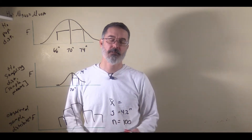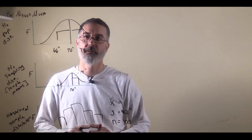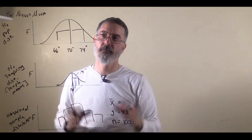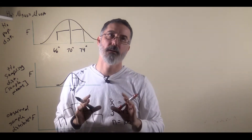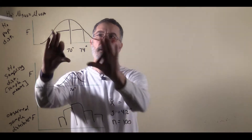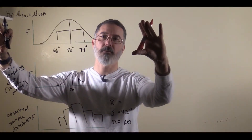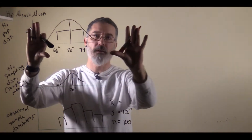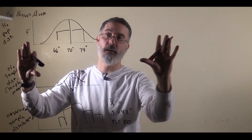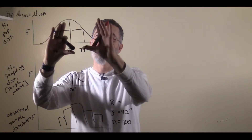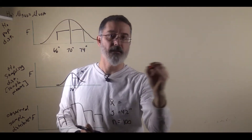When researchers are doing their study, what they are interested in is what is going on at the population level. For a research hypothesis that SUU men are taller than American men, that hypothesis is about what is going on at the population level. If SUU men are taller than American men, ideally the researcher would want to know how much taller they are — the difference between the population of SUU men and American men at the population level. That is the effect size.